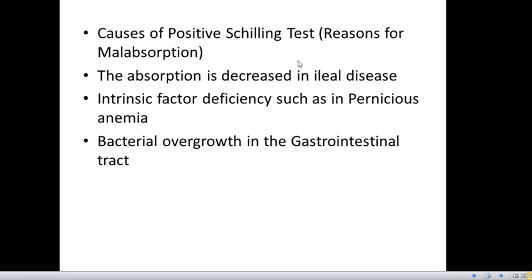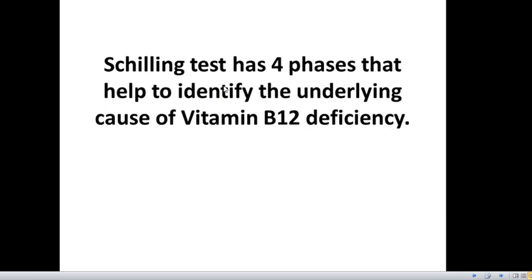Causes of a positive Schilling's test — that is, reasons for malabsorption — include: decreased absorption in ileal disease, intrinsic factor deficiency such as pernicious anemia, and bacterial overgrowth in the gastrointestinal tract. This Schilling's test is not specific but is used to screen. If these cases are diagnosed, confirmatory tests are needed. This test is usually not practiced anymore since newer tests are available, but it is an important test to rule out in investigation. Schilling's test has four phases that help identify the underlying cause of vitamin B12 deficiency.